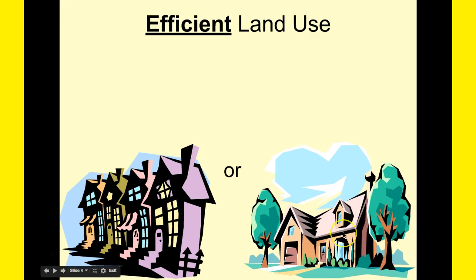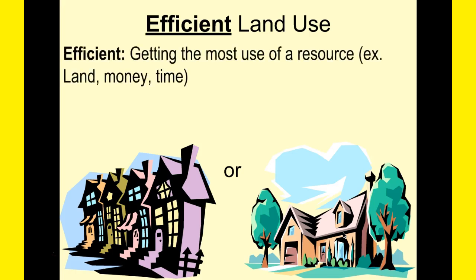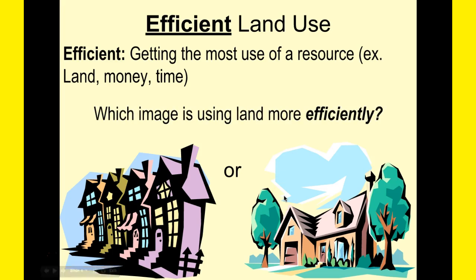I want to quickly go over the concept of efficient before we go any further. Efficient means getting the most out of something — using it for all it's worth. On the left, you have a piece of land with four homes on it. On the right, you have a similar-sized piece of land with only one house. The one on the left is using land more efficiently because you're getting the most out of that piece of land. And that really is the basis of smart growth, a type of development we're going to talk more about today.